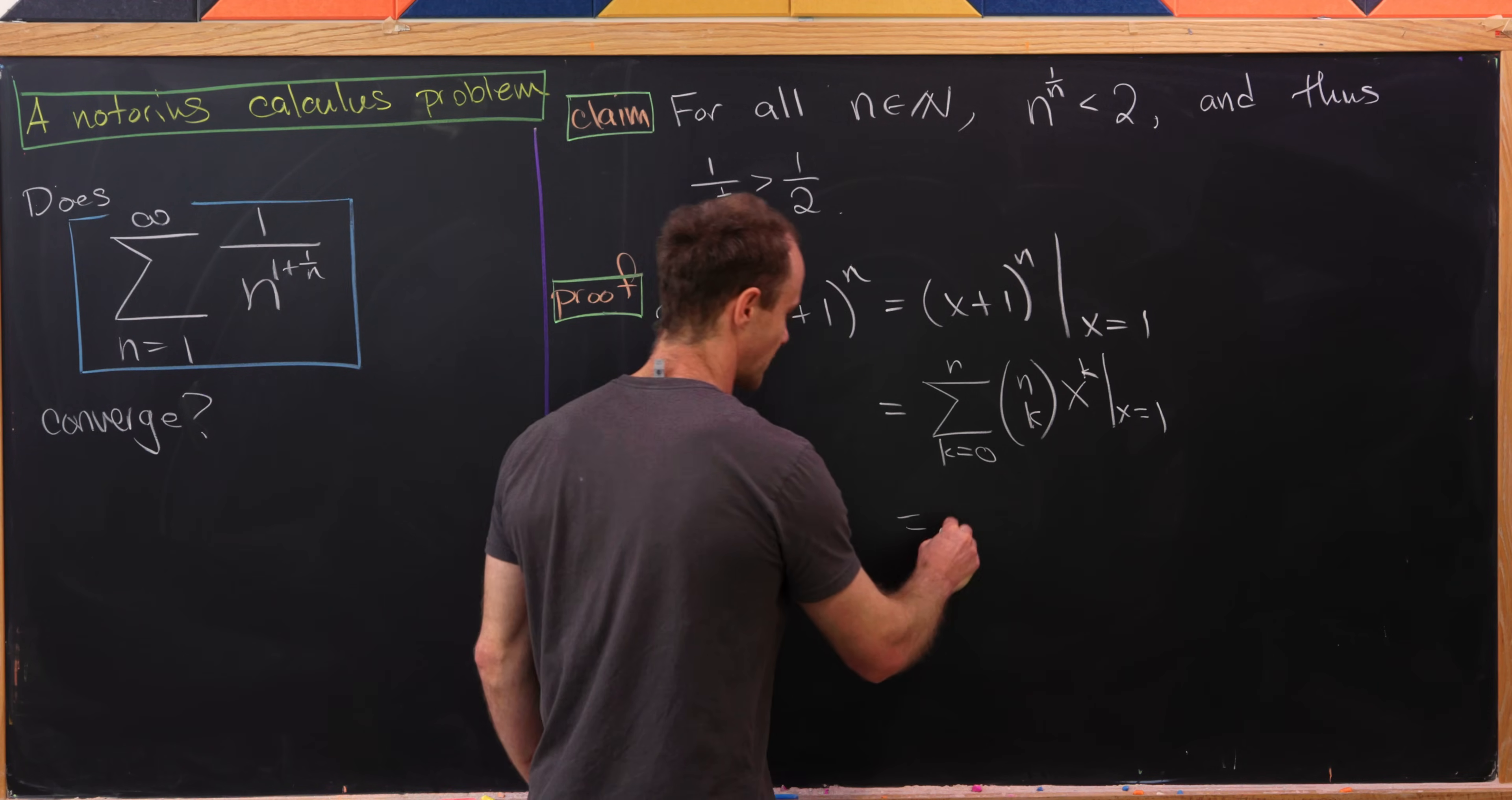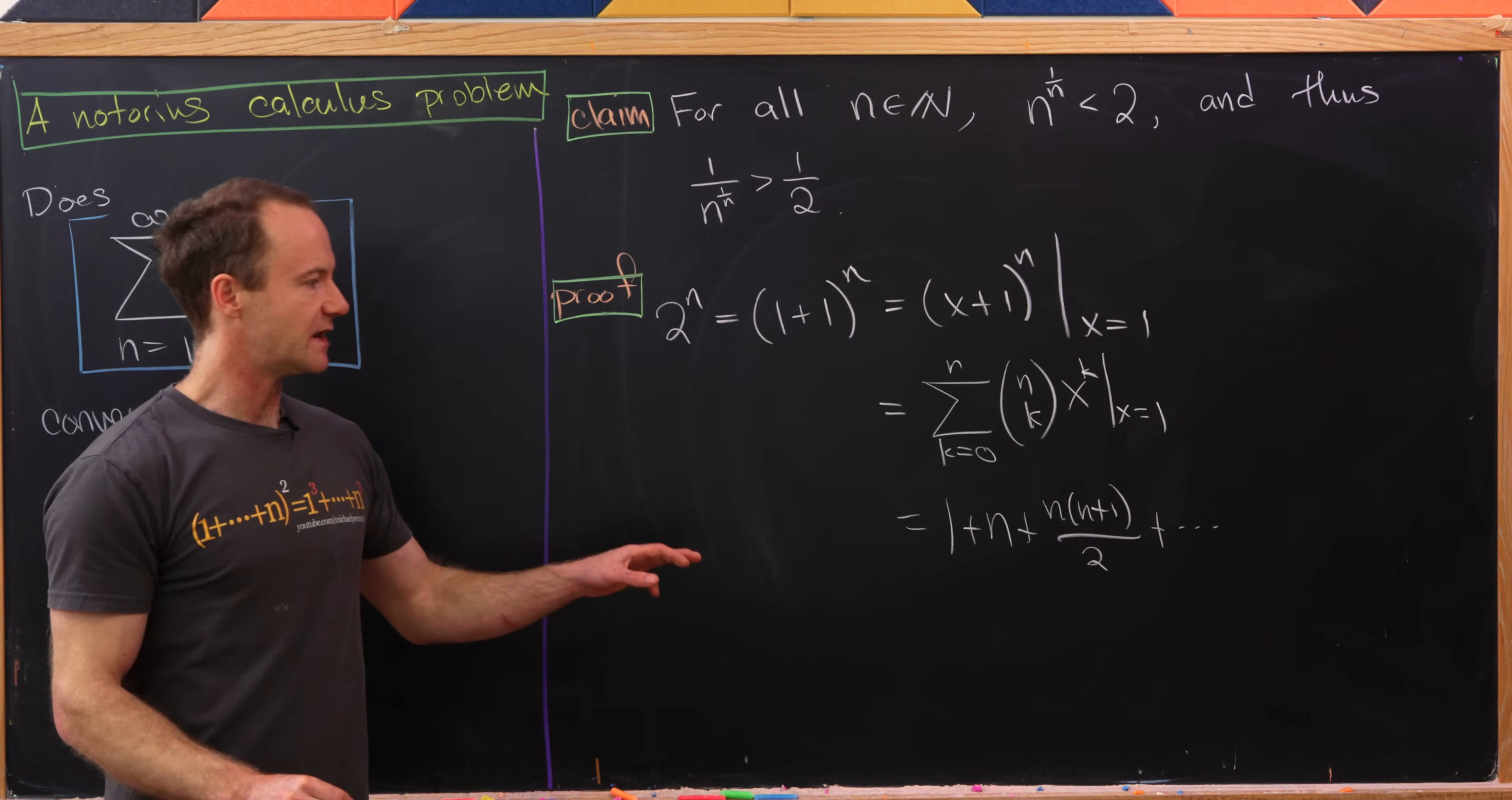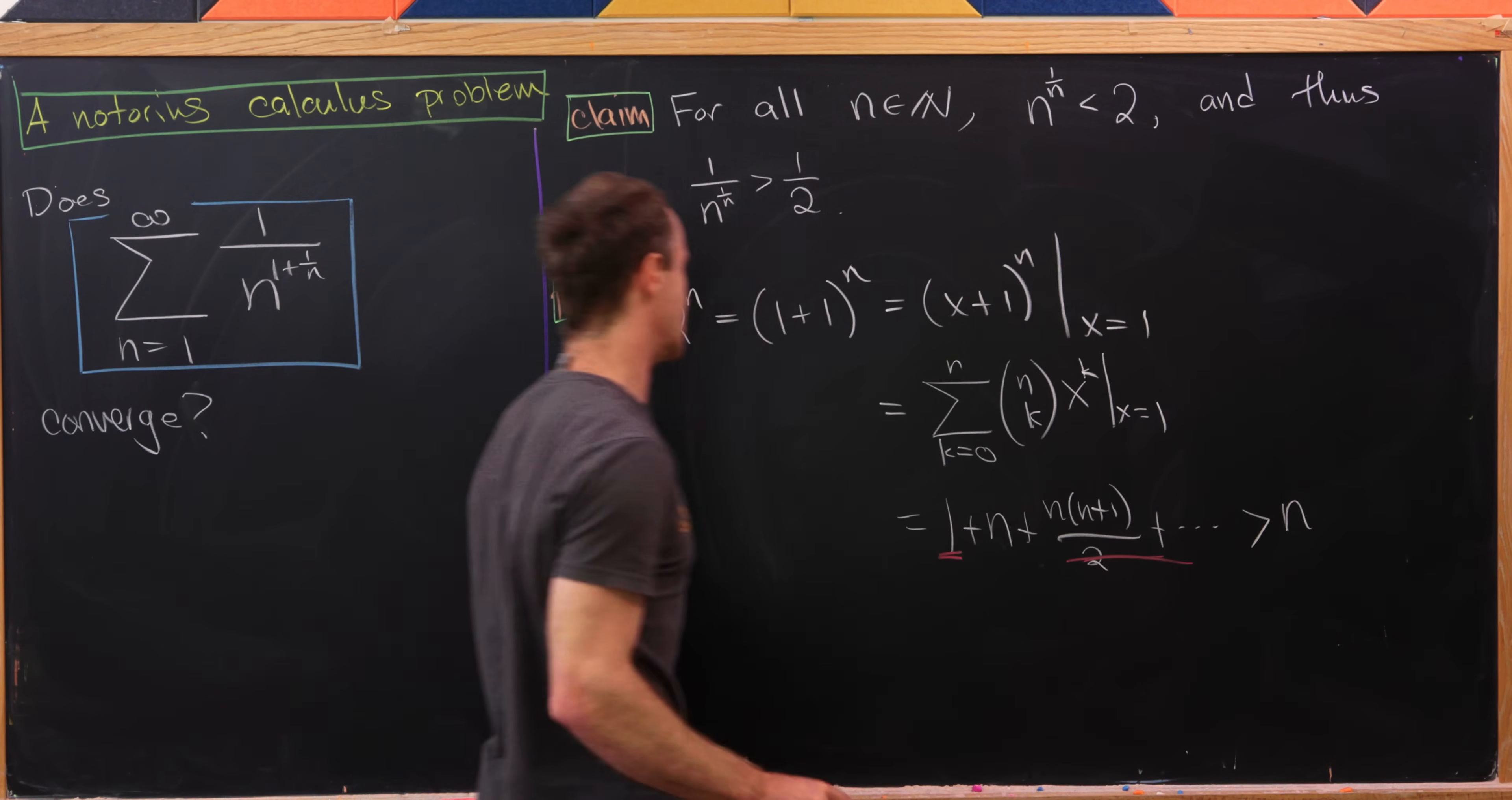So the first term will be 1. The second term will be n because (n choose 1) is n. The third term will be n(n+1)/2, that's like (n choose 2), and then so on and so forth. But now the important thing is that all of these are positive numbers, so if I drop any of them I end up with something smaller. So I'm gonna drop everything except for n.